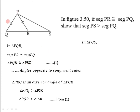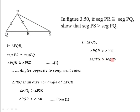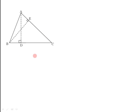From equation 1, angle PQR = angle PRQ, so angle PQR > angle PSR. Considering triangle PQS, angle PQS > angle PSQ. Since the side opposite to the greater angle is greater, PS > PQ. That is, segment PS is greater than segment PQ, which is what we wanted to prove.